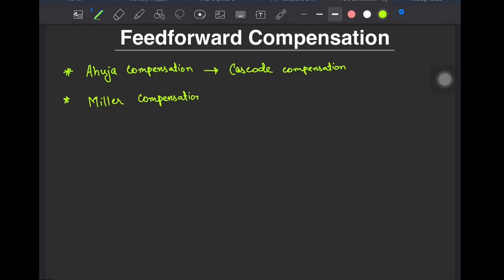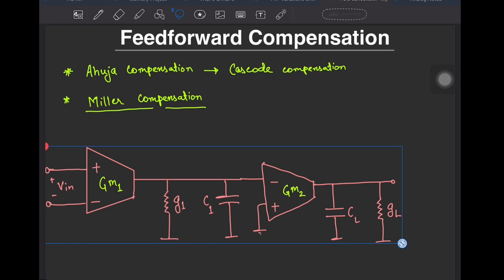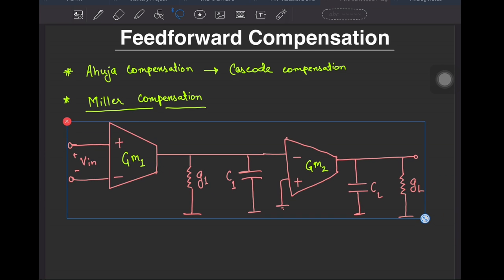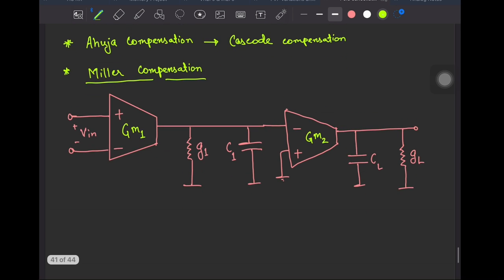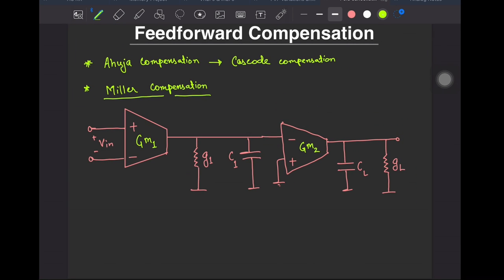Before jumping right at it, let's briefly review the Miller compensation technique just to jog our memory. Consider a two-stage OTA with the effective capacitances and conductances at the nodes as shown. Ignoring the internal parasitics of the OTA, what we have is a two-pole system. The goal of Miller compensation is to split the poles apart so that the system behaves as a first order system around the unity gain frequency.